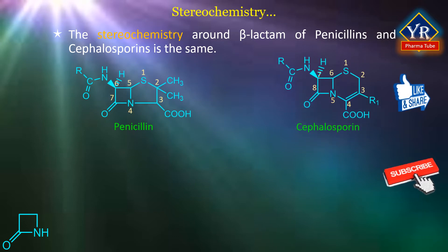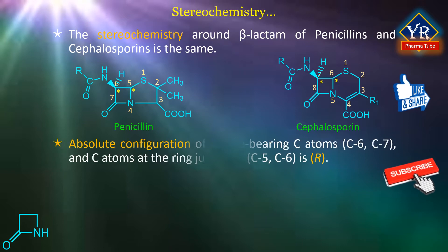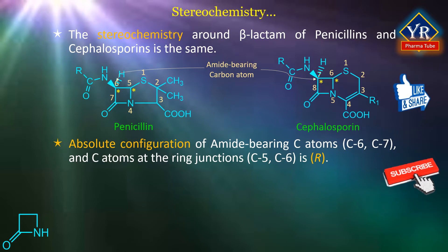The asymmetric centers at C5 and C6 in the penicillins correspond to those at C6 and C7 in the cephalosporins. Thus, the absolute configuration of the amide-bearing carbon atoms, i.e. C6 and C7, and the carbon atoms at the ring junctions, i.e. C5 and C6, is R in both cases. This makes the hydrogen atoms attached to these two carbons cis and placed on the alpha side of the fused ring systems, which are folded along the C5-C6 to N4-C5 axis.